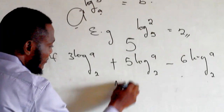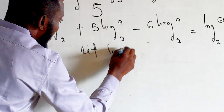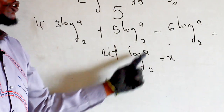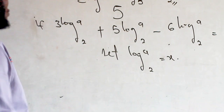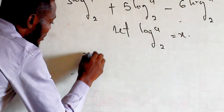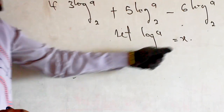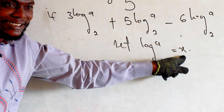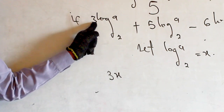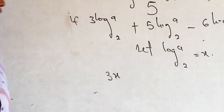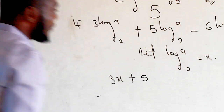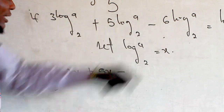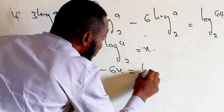Let log a base 2 equal x. Anywhere you see log a base 2, plug in x. So the first term becomes 3x, because log a base 2 equals x. The next term becomes plus 5x, and then minus 6x, all equal to log 64 base 2.